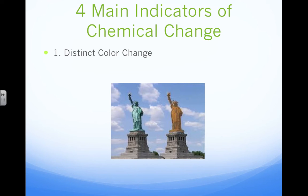There are four main indicators of chemical change. The first is a distinct color change. If you look at the image, at one point the Statue of Liberty was not that greeny-blue color it is today — it would have been a much different color. How the statue's structure and composition, how the components of it interacted with the air over time and the oxygen in the air, it has changed its color.